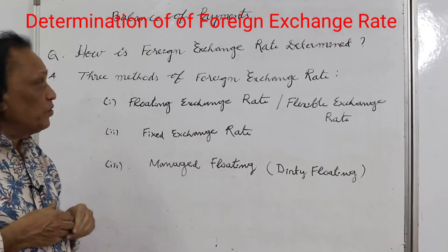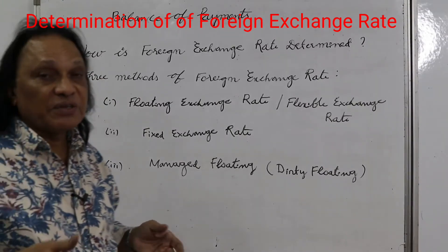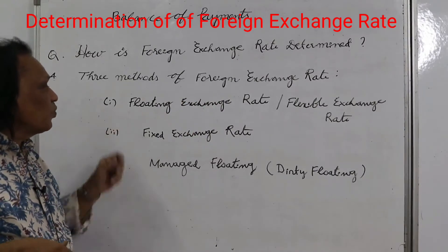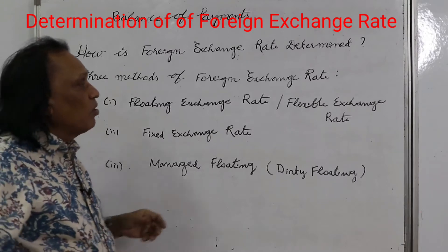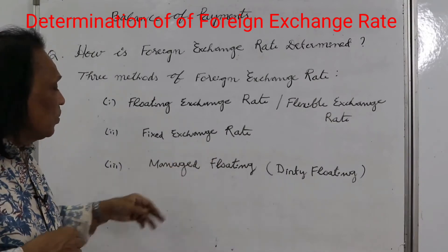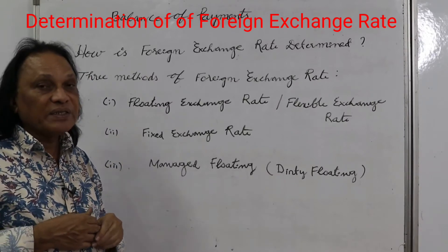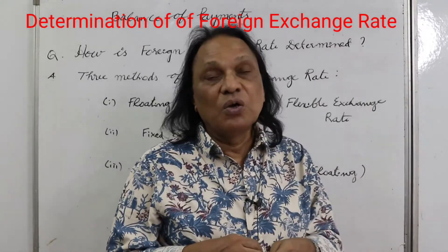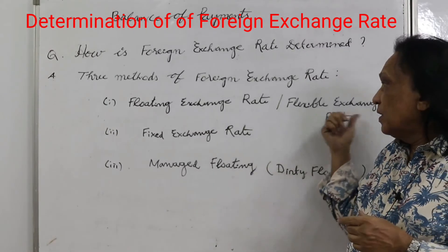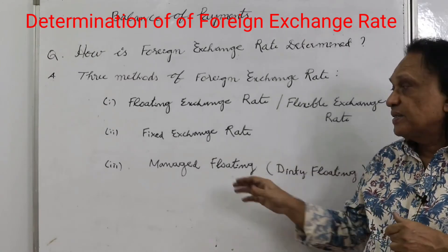Balance of payment is the name of the unit. Under this, how is foreign exchange rate determined? There are three methods of determining foreign exchange rate. The first one is floating exchange rate, also called flexible exchange rate. The second one is fixed exchange rate. And the last one is called managed floating, sometimes also called dirty floating.